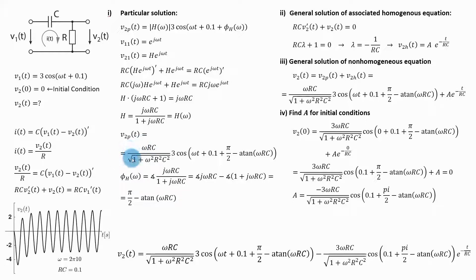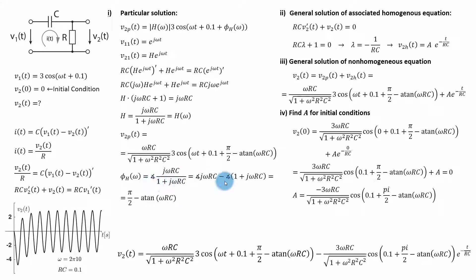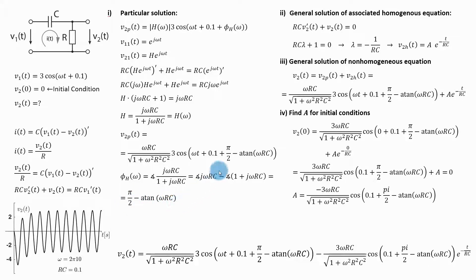When I take the magnitude and phase of this frequency characteristic and substitute, I get the particular solution. Finding the phase requires care: the phase of the numerator j·omega·RC is pi over 2 for positive omega, and the phase of the denominator one plus j·omega·RC is arctangent of omega·RC. So the phase of the frequency characteristic is pi over 2 minus arctangent of omega·RC.